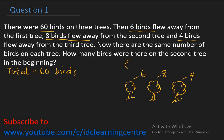How many birds will be remaining? 60 minus six that flew from the first tree, minus eight from the second, minus four from the third. 60 minus 6 is 54, 54 minus 8 is 46, minus 4 is 42. So subtracting 6, 8, and 4 from 60, you'll be left with 42. To check: 6 plus 4 is 10, plus 8 is 18; 42 plus 18 gives back 60.